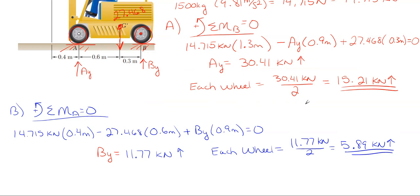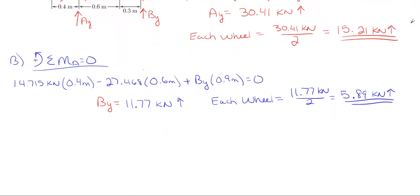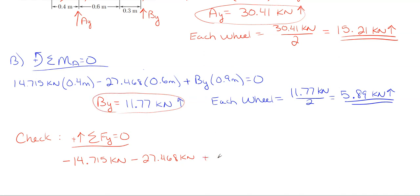We are going to sum vertical forces, and they all have to be in equilibrium, so they all have to cancel to be zero because we don't want this forklift moving vertically. We would have our crate weight going downward, so it's minus 14.715 kilonewtons. And then our forklift weight going downward, so minus 27.468 kilonewtons. And then we would have our total wheels at the front of 30.41 kilonewtons upward, and then plus the total amount of the wheels in the back, which is 11.77 kilonewtons up. When we add all these, we end up getting minus 0.003. So we didn't get exactly zero.